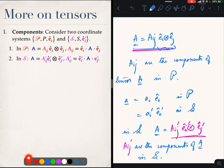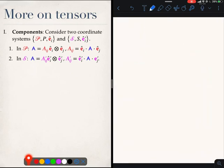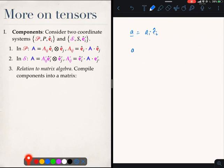Just like for vectors, we can do the same thing for tensors. When we wrote a as ai ei, we said that we could compile these components in matrix form and write them like this: A1, A2, A3. These are the components of a in P.